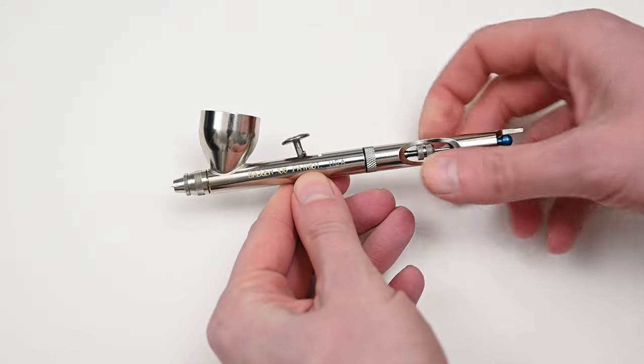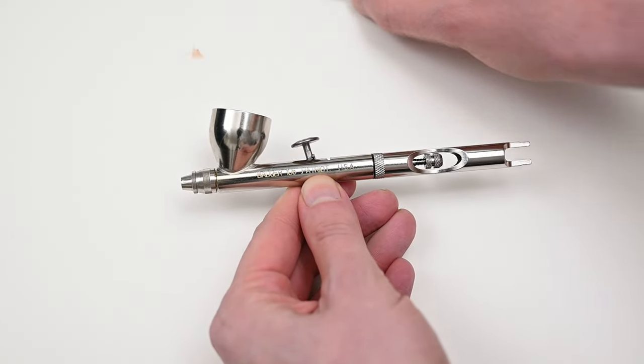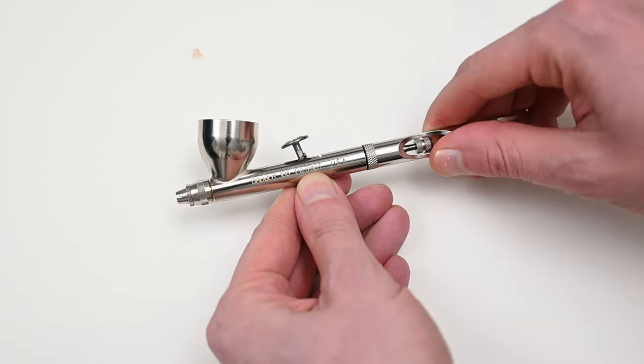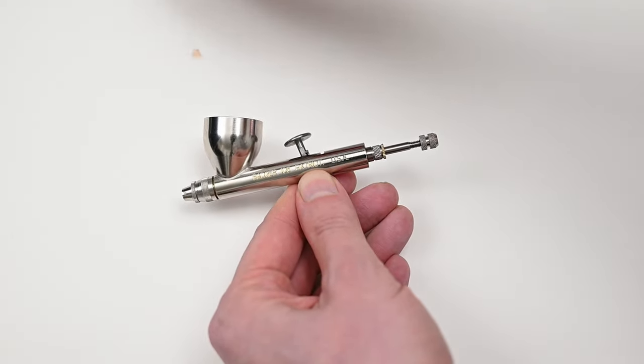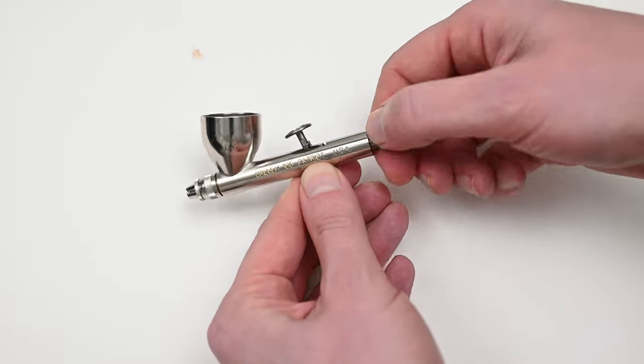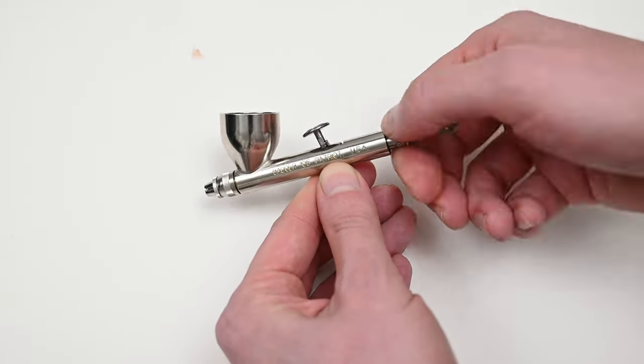I know I've said this in other reviews but Badger airbrushes are the most annoying to break down and reassemble. Fortunately the head assembly on the Patriot 105 is much easier to break down than the Sotar 2020. But the spring assembly and the trigger lever are very frustrating and I'll show you why in a minute.